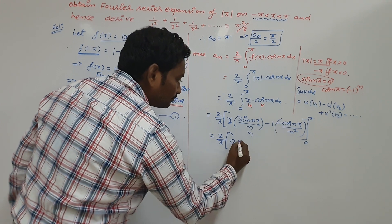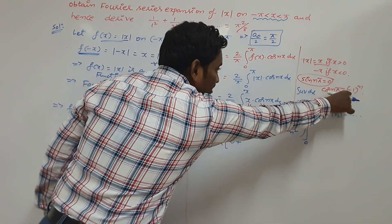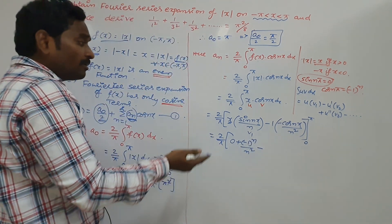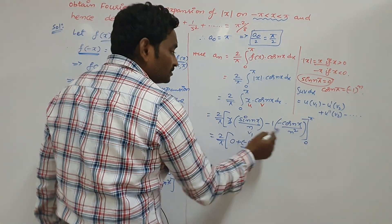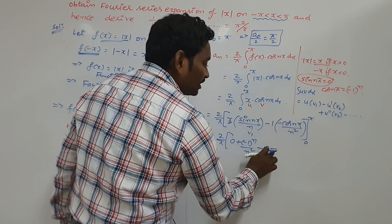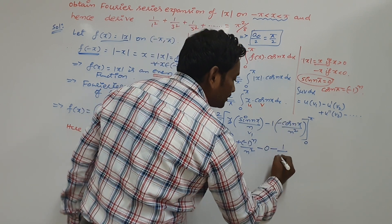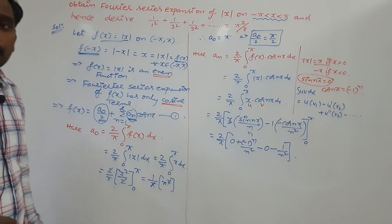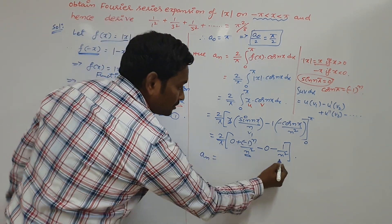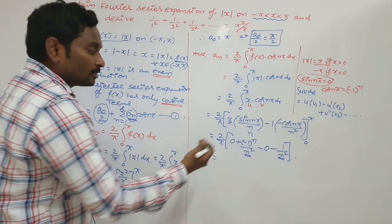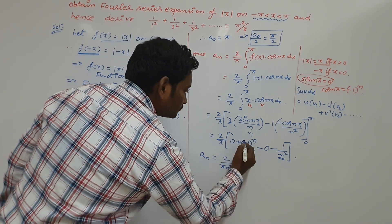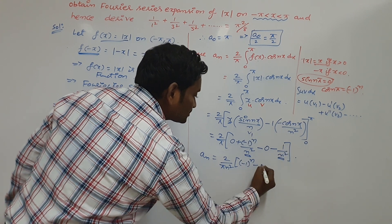Cos nπ equals minus 1 to the power n, so the denominator has n squared. Now applying the lower limit x equals 0: 0 into anything is 0 for the first part, and minus cos 0 by n squared, where cos 0 equals 1, giving 1 by n squared. Combining both parts, since both have n squared in the denominator, we factor out n squared: aₙ equals 2 by pi n squared times [(-1)ⁿ minus 1].